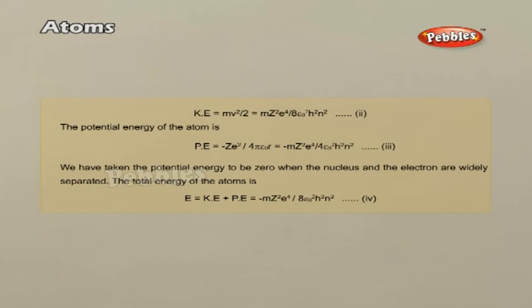Equations 1 to 4 give various parameters of the atom when the electron is in the nth orbit. The atom is also said to be in the nth energy state in this case.